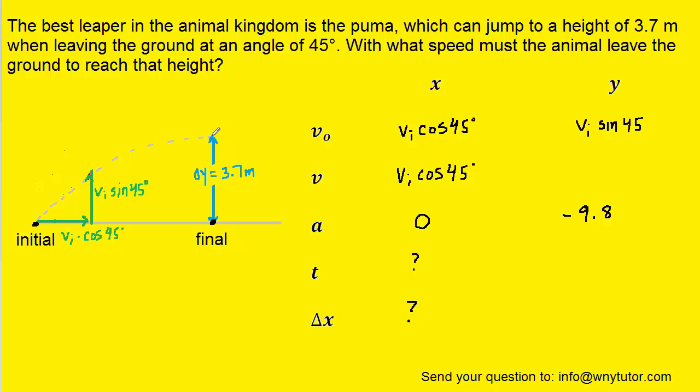Once the Puma reaches the peak of its height, for that moment, it has no vertical or y velocity. So we know at the final point right up here, the final velocity in the y direction is zero. Very important point.